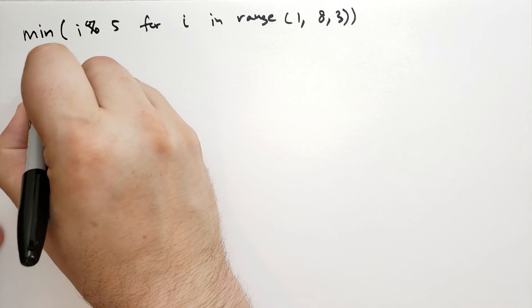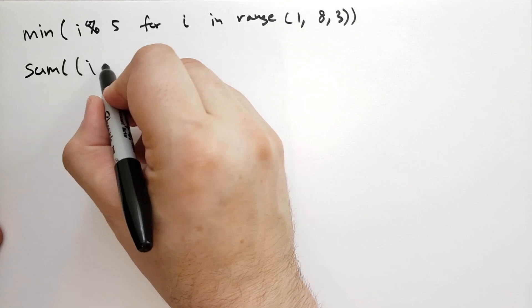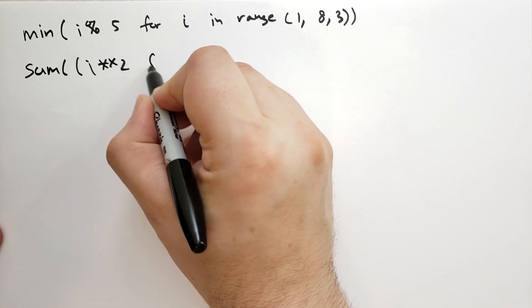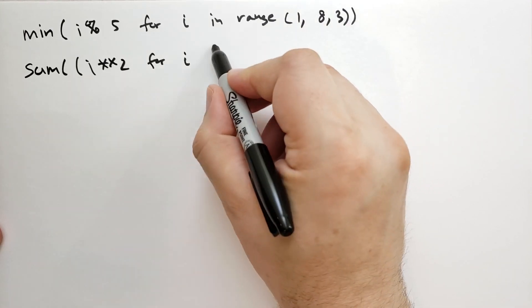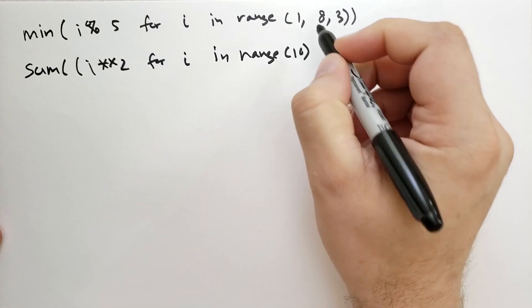So this is an example of the sum function, and I'm going to pass in a generator expression, where I take i, raise it to the second power for each i in the range of 10.